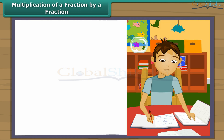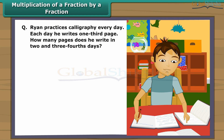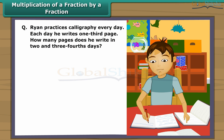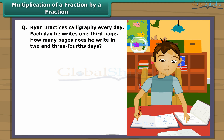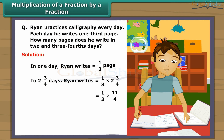Multiplication of a fraction by a fraction — example. Ryan practices calligraphy every day. Each day he writes one-third of a page. How many pages does he write in two and three-fourths days? The part written in one day is one-third, so the part written in two and three-fourths days is one-third multiplied by two and three-fourths. This equals one-third multiplied by eleven-fourths, which gives eleven-twelfths. Thus Ryan writes eleven-twelfths of a page in two and three-fourths days.